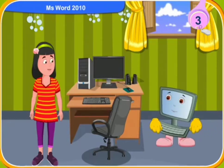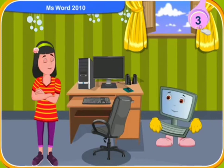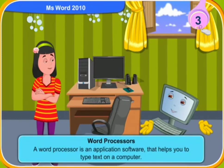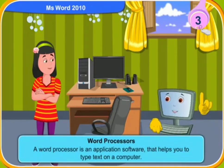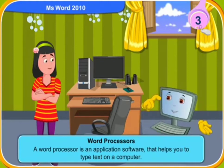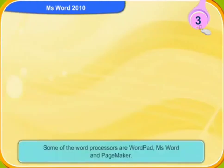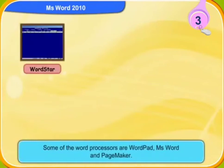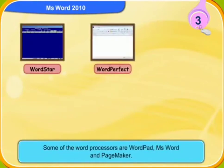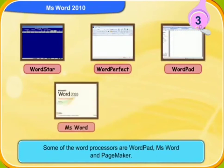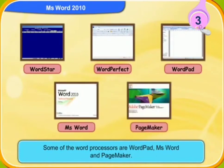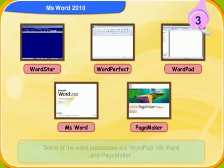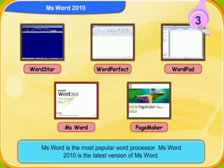Tell me more about word processors. A word processor is an application software that helps you to type text on a computer. Some of the word processors are WordStar, WordPerfect, WordPad, MS Word, and PageMaker. Of all these programs, MS Word is the most popular.